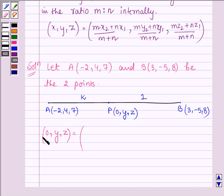the first X coordinate is given by MX2 plus NX1 upon M plus 1 and here X1, Y1 and Z1 are the points (-2, 4, 7) and here X2 is 3, Y2 is -5 and Z2 is 8.